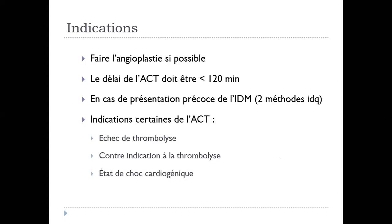Par contre, le patient consulte dans une ville où il n'y a pas de salle de cathétérisme disponible sur place, et le délai, si on va le transférer à Sahloul, ça va prendre plus que 120 minutes. À ce moment-là, on va le thrombolyser et le transférer tout de suite à un service où il y a une salle de cathétérisme. S'il y a un succès de thrombolyse, la coronagraphie est réalisée dans les 2 à 24 heures. S'il y a un échec, le patient entre tout de suite pour une angioplastie de sauvetage.